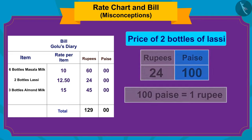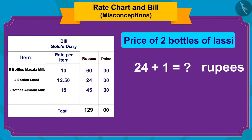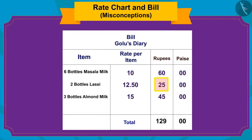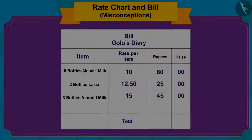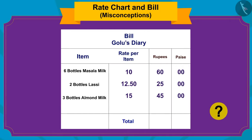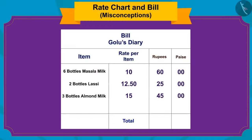So what should be the correct cost of two bottles of lassi? Yes — 25 rupees. Children, can you now find the true total value of all items? Well done, children, you found the answer correctly. Sher Khan and Bhoala owe a total of 130 rupees to Golu.